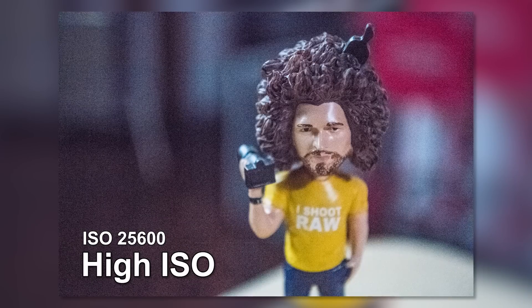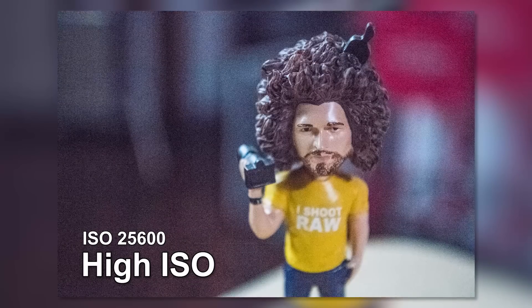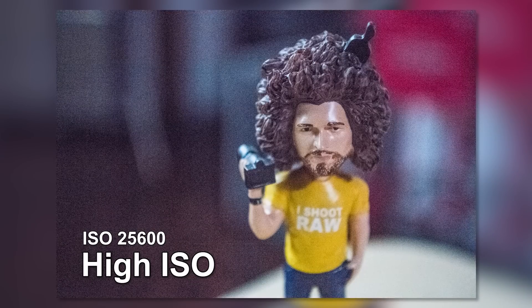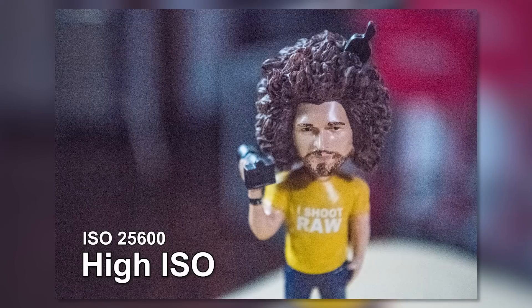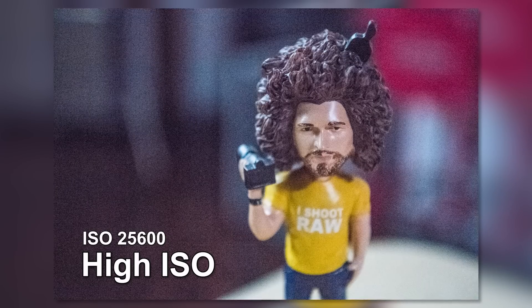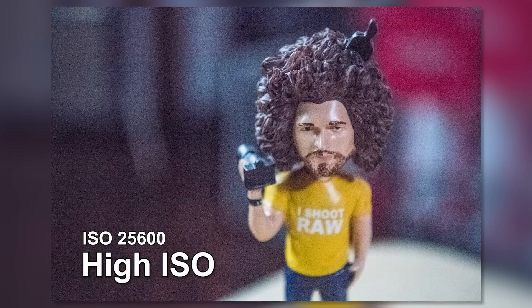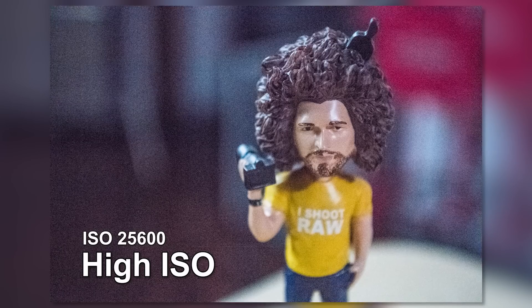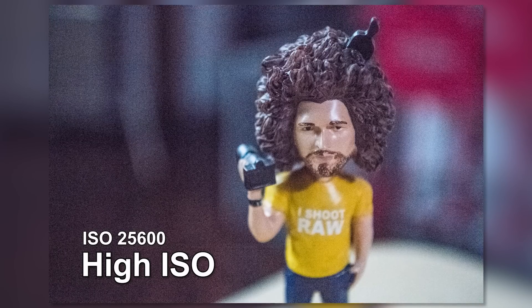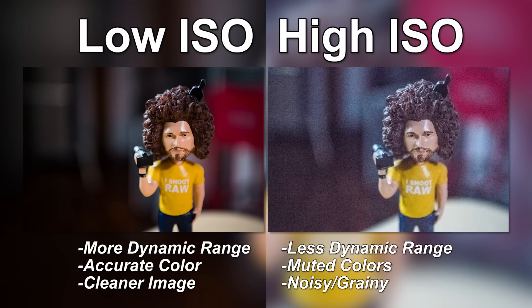Shadows are where you start to see a lot of the noise and grain. Now when we switch over to the super high ISO image, you see it has a more muted color look — because the higher the ISO goes, the more color you're losing and the dynamic range goes down. Also, you're introducing a lot more noise and grain, so you're not getting a cleaner image. So that's understanding ISO as it pertains to noise: the lower the ISO, the cleaner the image; the higher the ISO, the more noise and grain you're going to introduce.